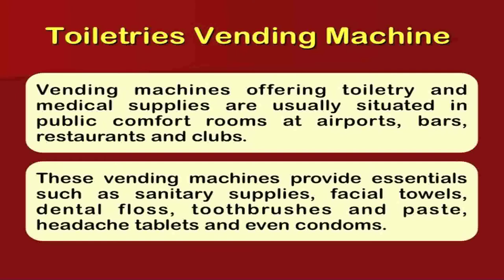Toiletries vending machines offer toiletries and medical supplies. They are usually situated in public comfort rooms at airports, bars, restaurants, and clubs. These vending machines provide essentials such as sanitary supplies, facial towels, dental floss, toothbrushes and paste, headache tablets, and even condoms. When we travel we don't take everything, and in an emergency at a hotel or airport you can access the vending machine, pay, and get the toiletry facility you need.